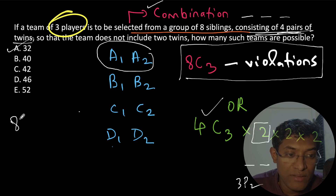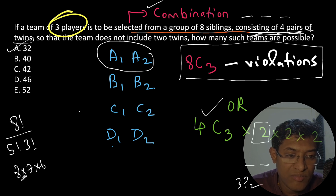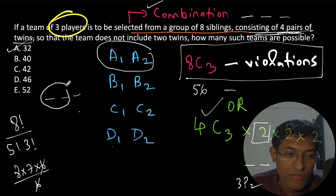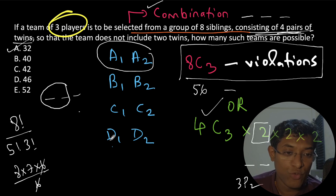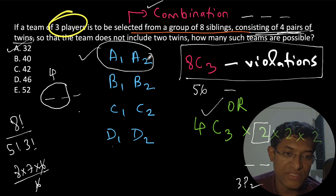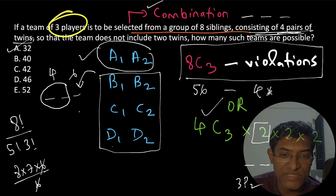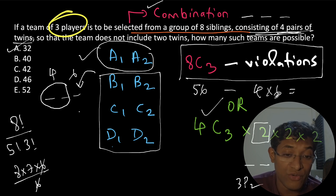Using the first approach: 8C3 equals 8 factorial divided by 5 factorial times 3 factorial, which is 8 times 7 times 6 divided by 6, giving 56. Now for violations: a violation occurs when two twins are both included in the team. There are 4 pairs of twins, so there are 4 ways to have twins occupy two of the three spots. The remaining spot can be filled by any of the remaining 6 people. So violations equal 4 times 6, which is 24. Therefore the answer is 56 minus 24, which equals 32. The correct answer is option A.